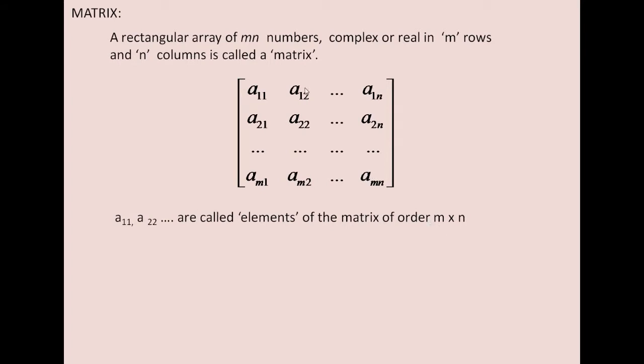Understood that? So total number of elements MN, and this is said to be a matrix of order M by N. It should have M rows and N columns.